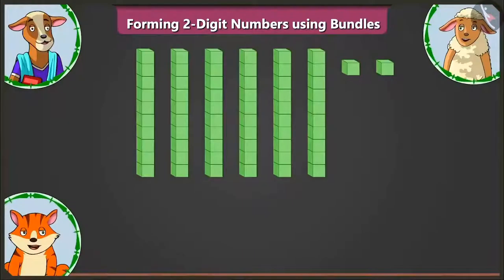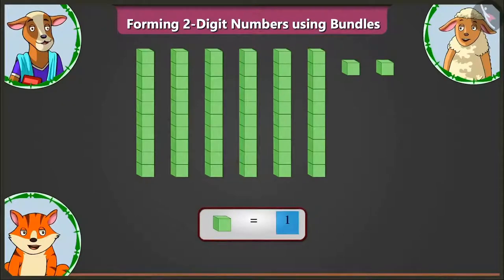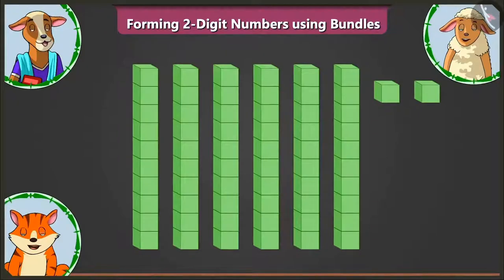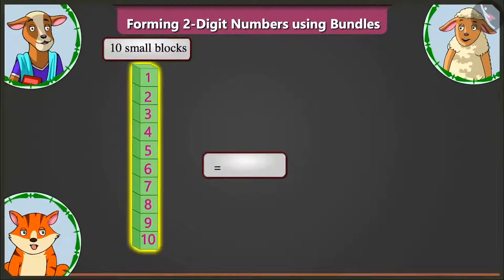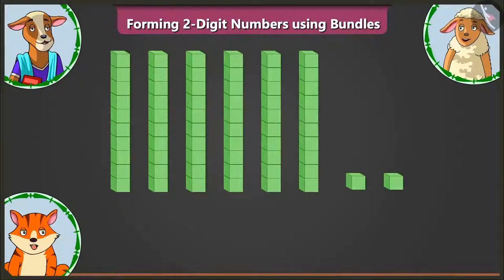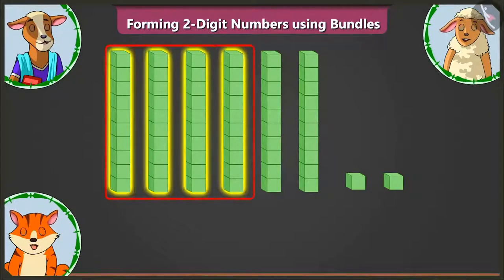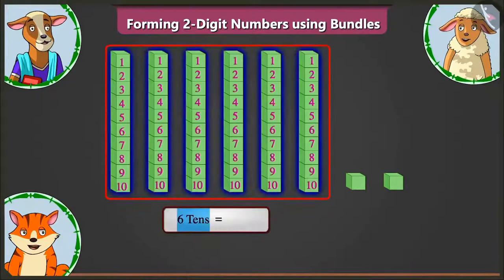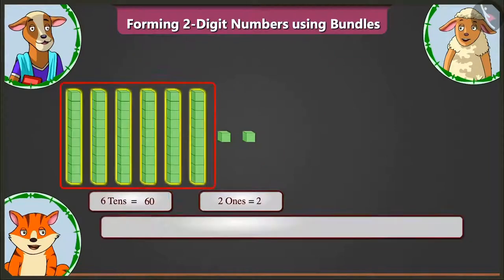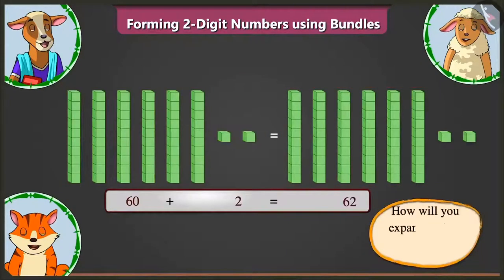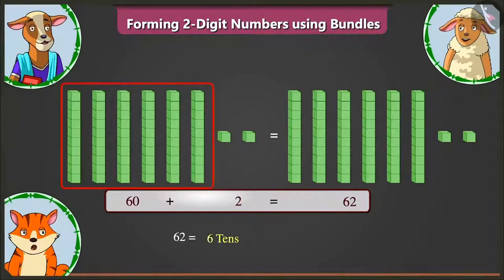Now let us look at the second example. Billy, here we count one small block as one. In the first big block there are ten small blocks — that is one ten. There are six groups of ten blocks each, so six tens makes 60. There are also two small blocks — two ones. Adding two to 60 gives us the number 62. How will you expand 62? 62 means six tens and two ones, so the two parts will be 60 and 2.